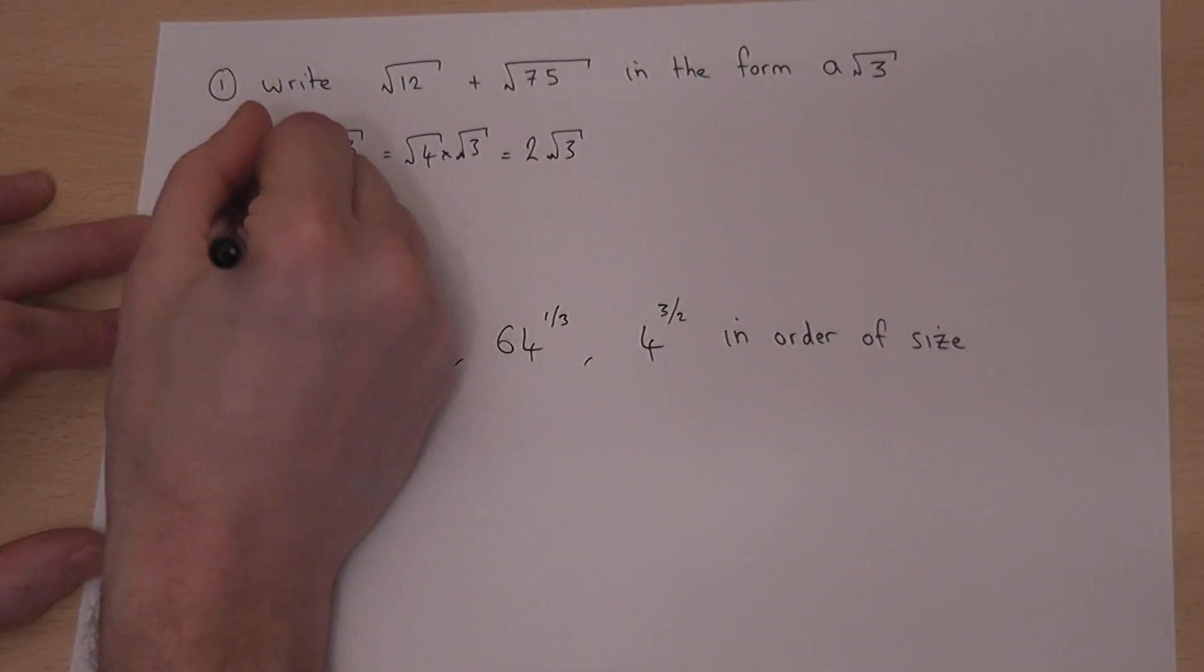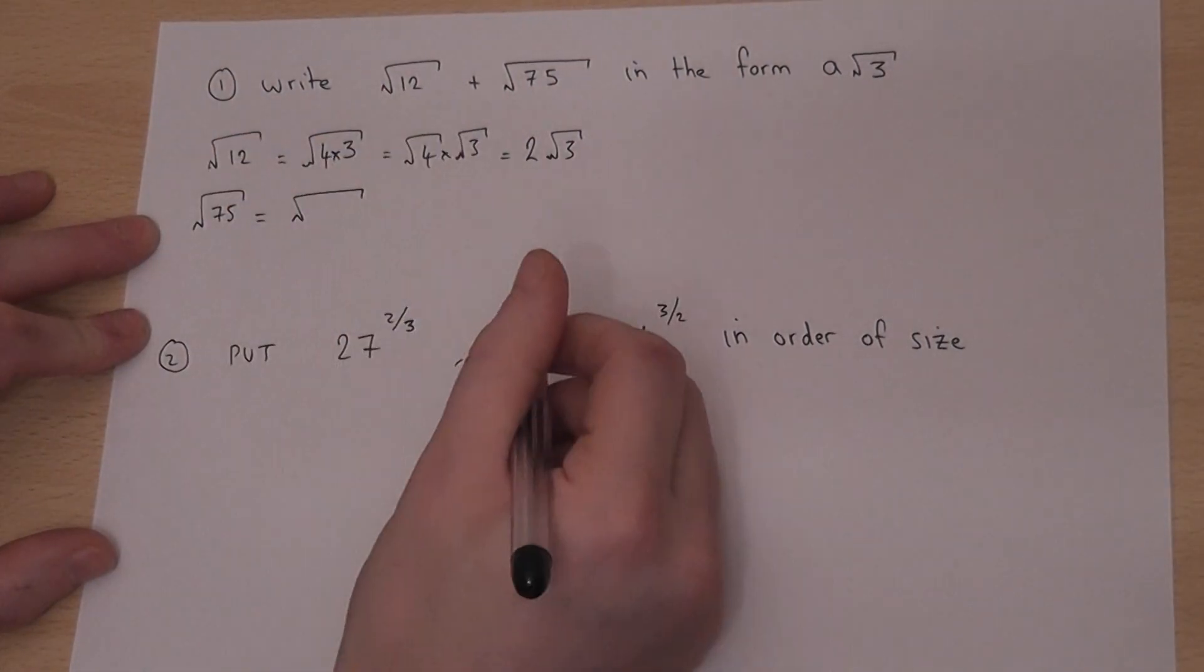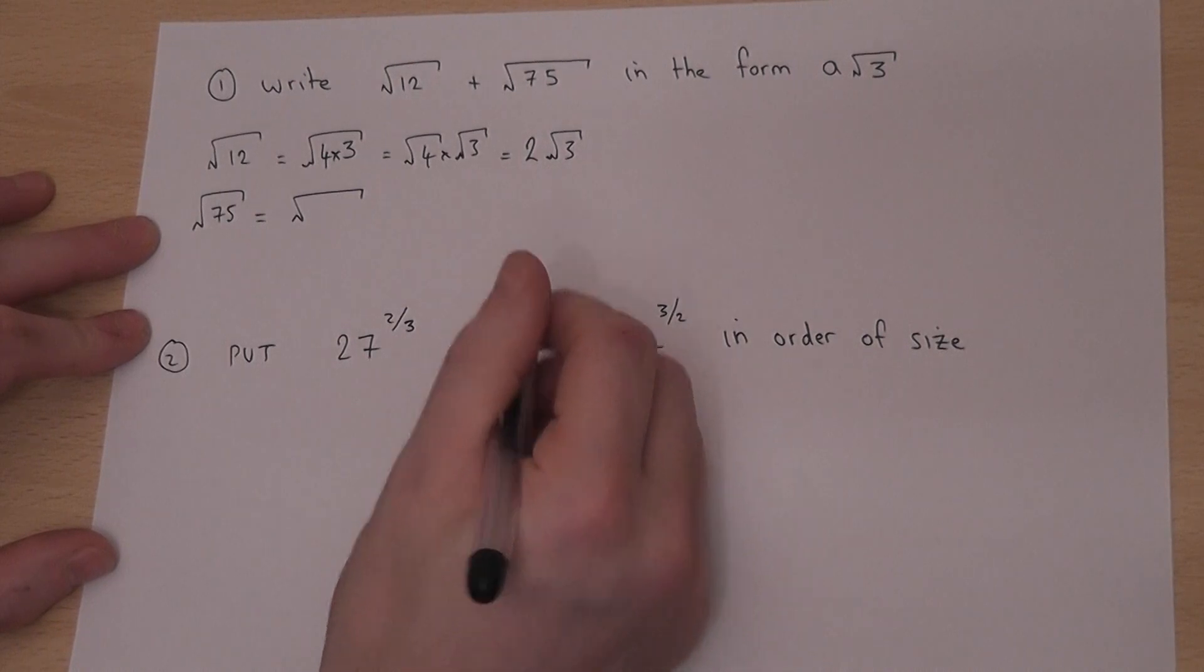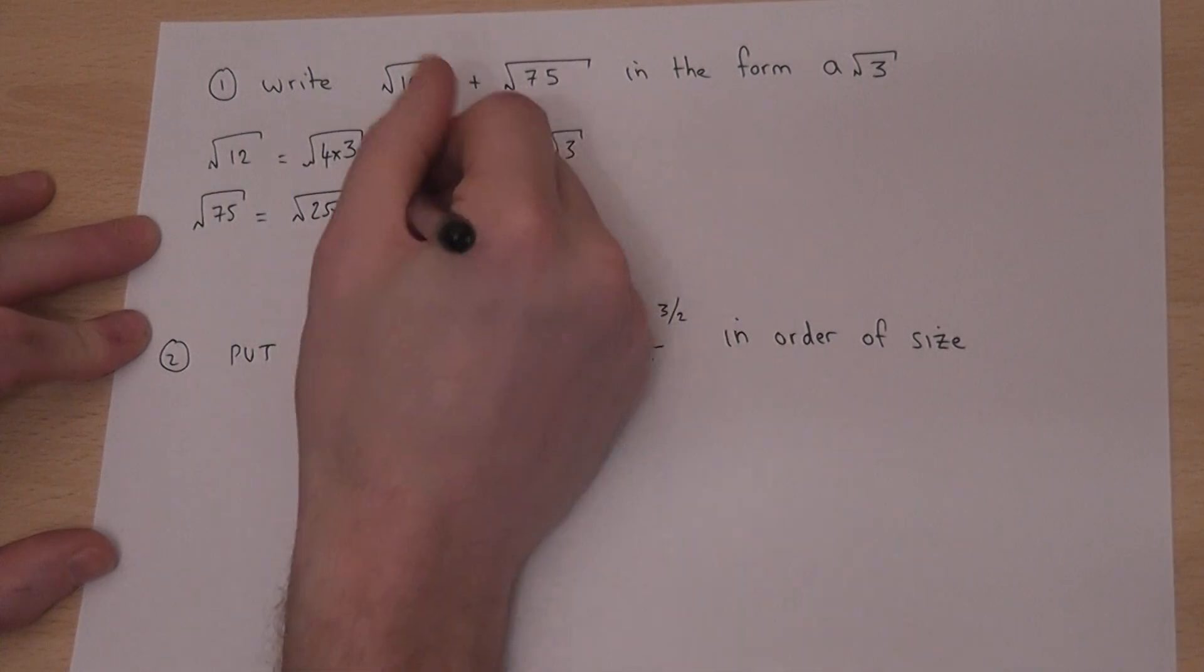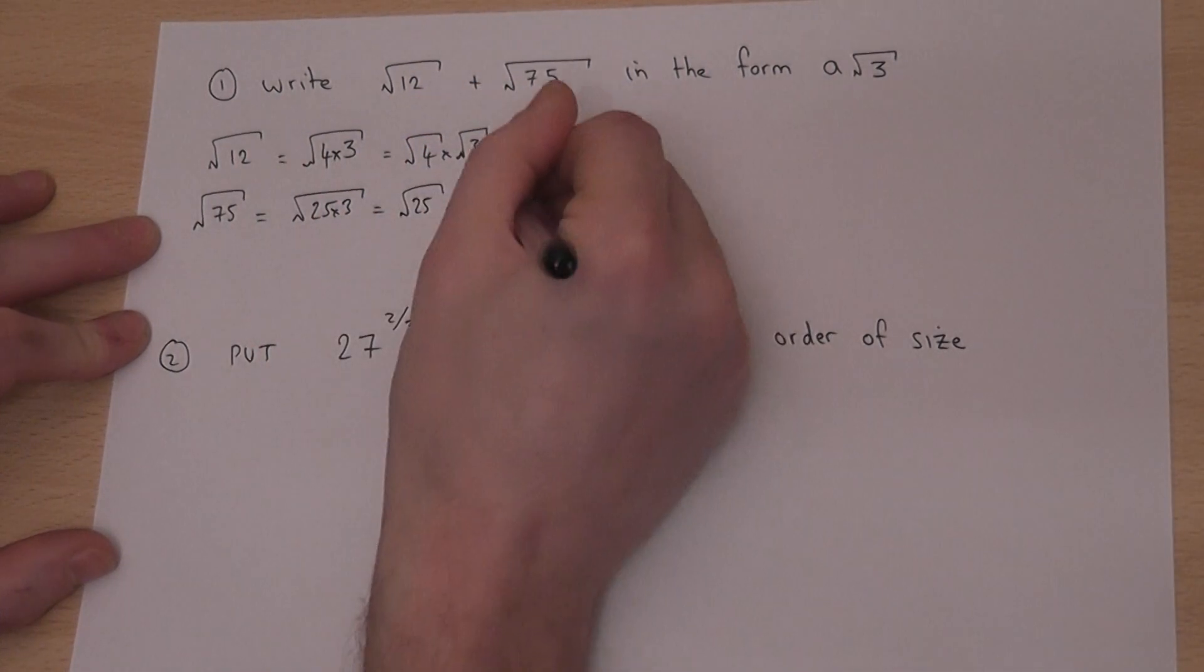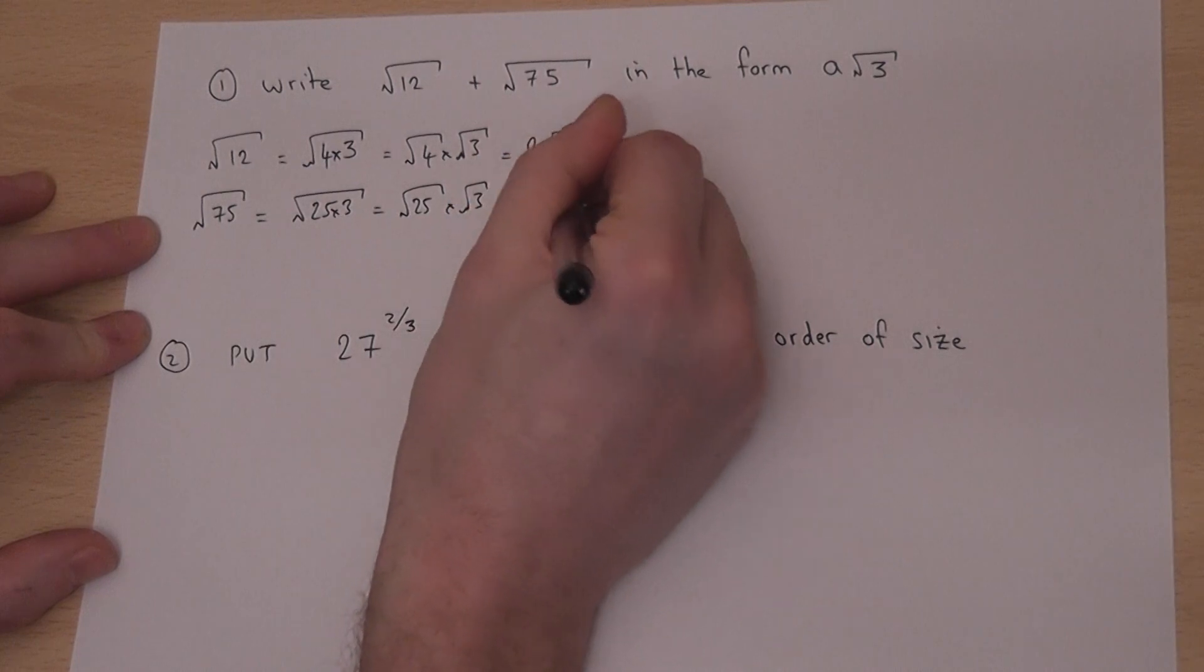Root of 75, similarly. The highest square factor of 75 is 25. 25 times 3, so in a similar way, root 25 times root 3 is 5 root 3.